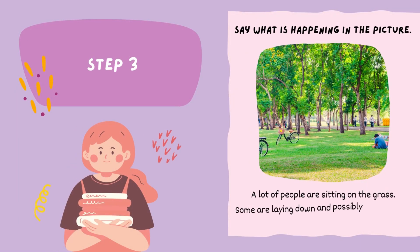Step 3: Say what is happening in the picture. For example: 'A lot of people are sitting on the grass. Some are laying down and possibly taking a nap. A few people are walking.'